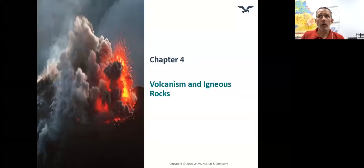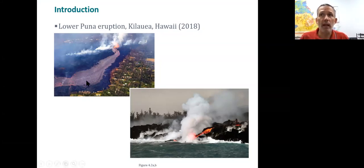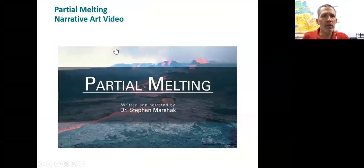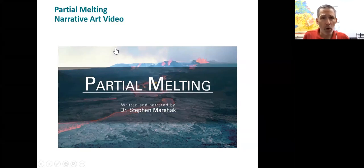Hi, today we're going to be talking about Chapter 4, Igneous Rocks and Volcanoes. When we start looking at igneous rocks and volcanoes, here are some examples of very fluid lava erupting out of Hawaii in 2018. Lava can be either very fluid or very explosive, and part of this is due to something called partial melting.